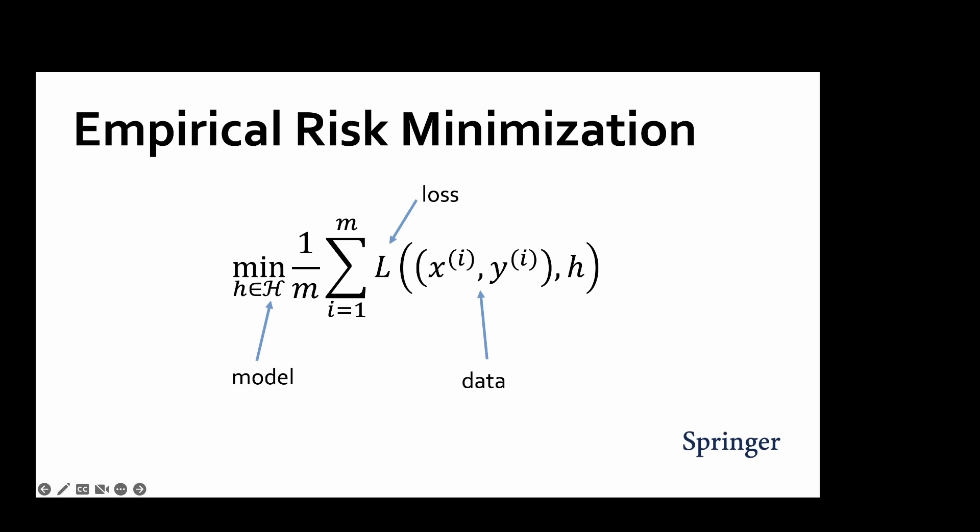Indeed, we use this data set to train a model by choosing a hypothesis with the minimum average loss on the training set. Empirical risk minimization binds together the three main components of machine learning in a principled fashion.